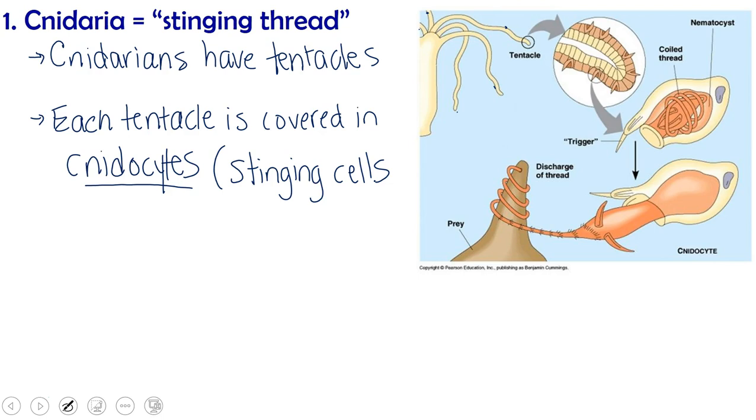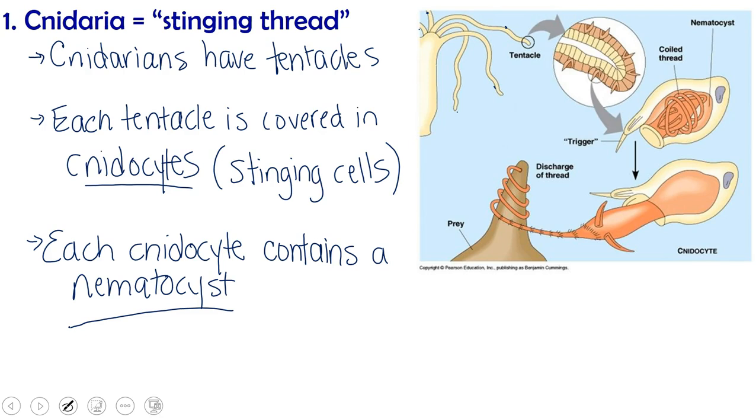Because each cnidocyte contains a nematocyst. And this nematocyst is the organelle inside the cell that is capable of stinging. Or it is the stinging structure.